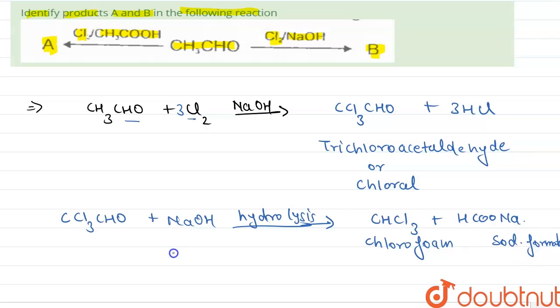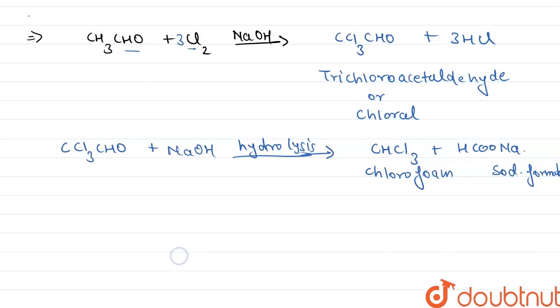So here this is the reaction of acetaldehyde with Cl2 in presence of NaOH. Now we will see the second reaction: acetaldehyde reacts with Cl2 in presence of acetic acid. Aldehydes containing alpha-hydrogen atoms undergo halogenation when treated with halogen in presence of an acid.